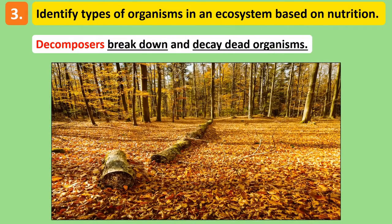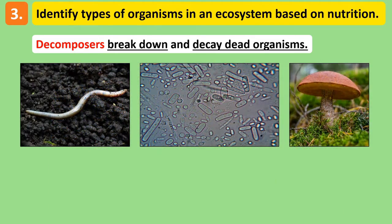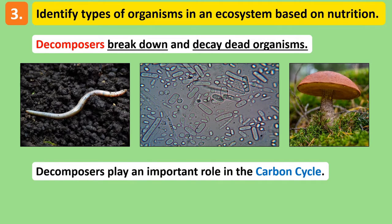Aside from producers and consumers, ecosystems also need decomposers. Decomposers are living things that feed on dead organisms. When something dies, it begins to rot. This is because decomposers like earthworms, flies, bacteria and fungi break them down. Decomposers are really important for the ecosystem because not only do they stop dead things from piling up around us, but they also recycle nutrients back into the environment, which we'll discuss more in the carbon cycle topic.